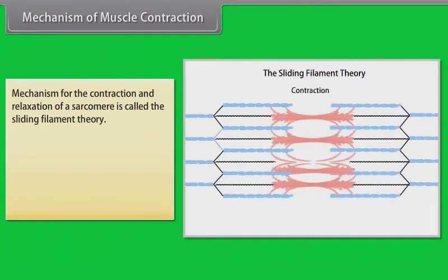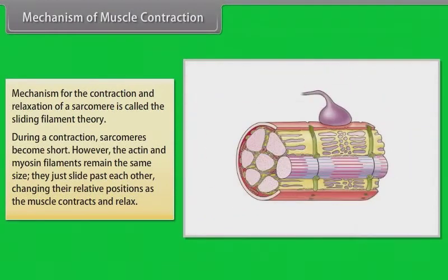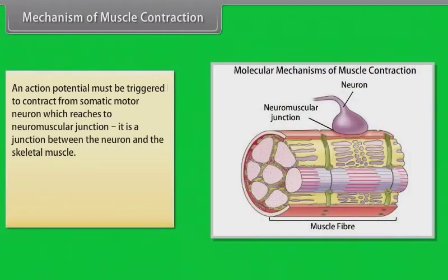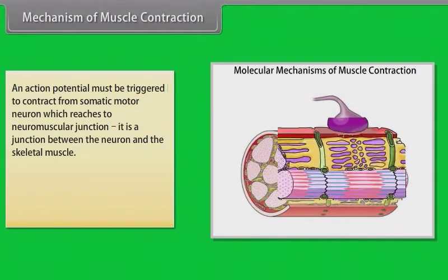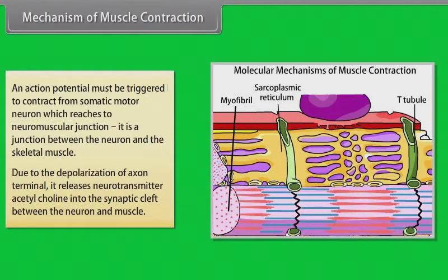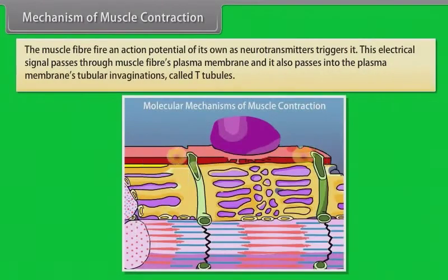The mechanism for the contraction and relaxation of a sarcomere is called the sliding filament theory. During contraction, sarcomeres become shorter; however, the actin and myosin filaments remain the same size — they just slide past each other. An action potential must be triggered from a somatic motor neuron, which reaches the neuromuscular junction — the junction between the neuron and the skeletal muscle. Due to depolarization of the axon terminal, it releases the neurotransmitter acetylcholine into the synaptic cleft between the neuron and muscle.